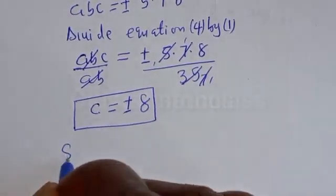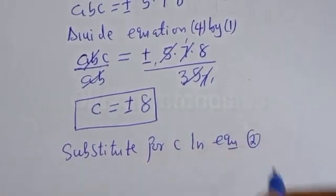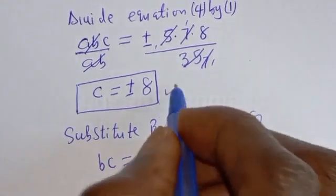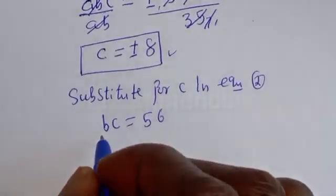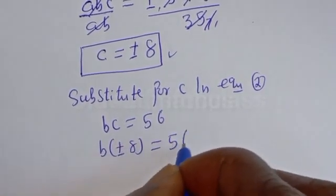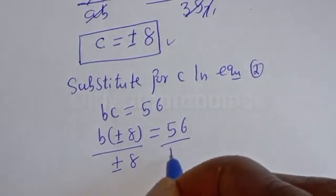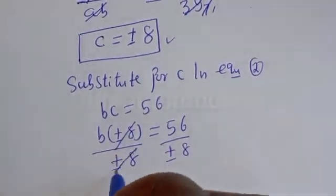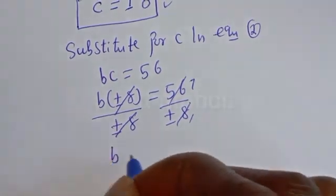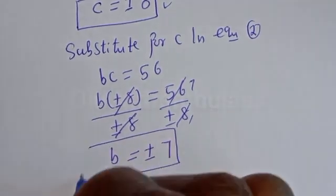Now let's substitute for C in equation 2. Equation 2 is BC=56, and C is equal to plus or minus 8. So B×(±8)=56. Dividing both sides by ±8, the 8s cancel and B is equal to plus or minus 7. This is the value of B.